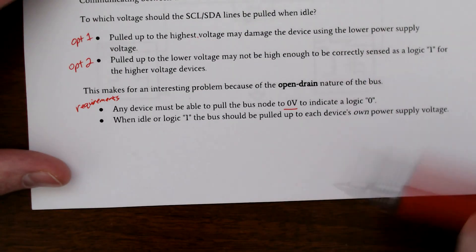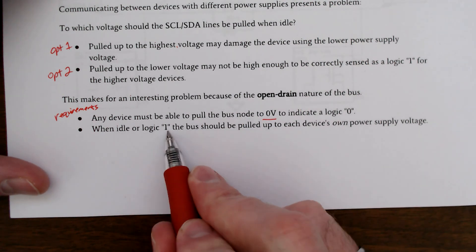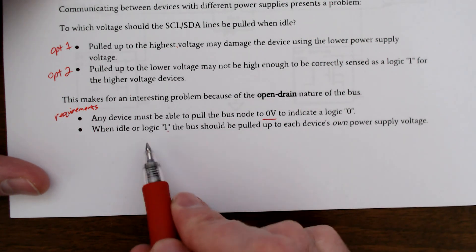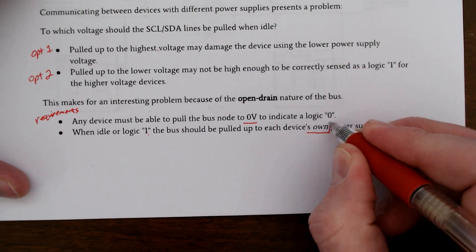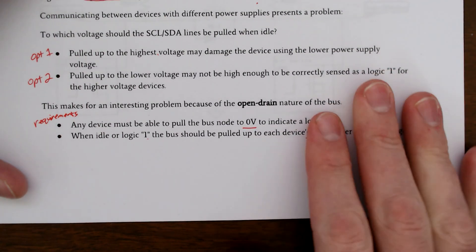Either side can do this irrespective of the higher power supply. The trick here is when it's a 1, the bus is idle or we want to indicate a logic 1. We need to pull up to its own power supply. How do we do that?